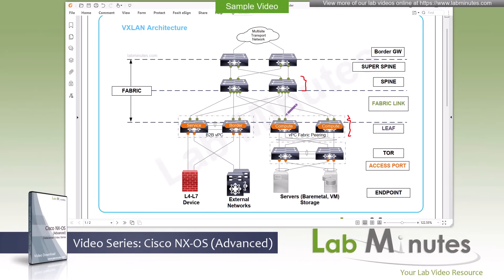Leaves may have one or more connections to the spines depending on the required bandwidth. In our case here, when you have two spines, a leaf would at minimum have connections to each of the spines. While spines usually do not have links to each other, leaves may be connected together if a back-to-back VPC is deployed, which is the case shown here.